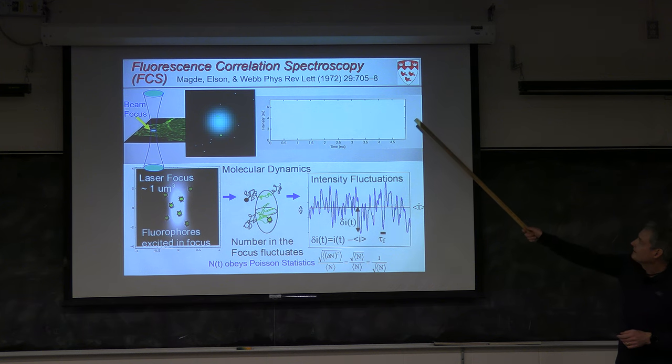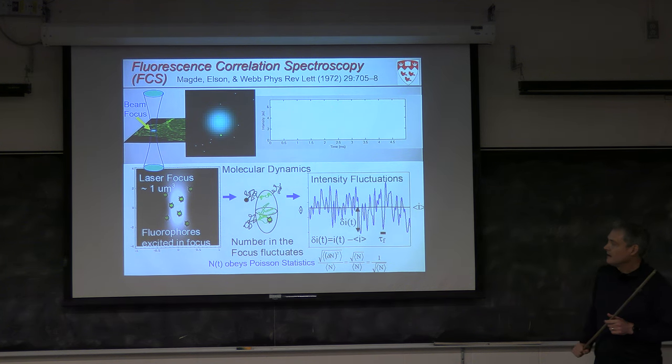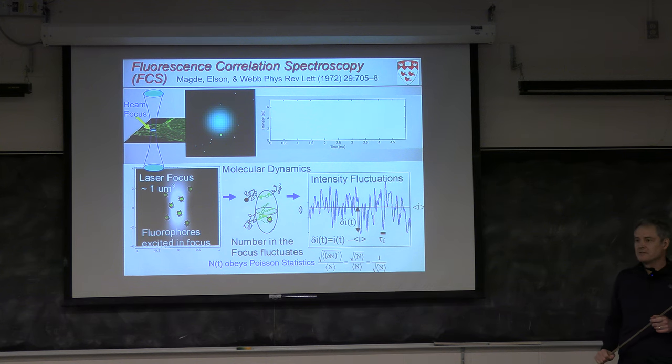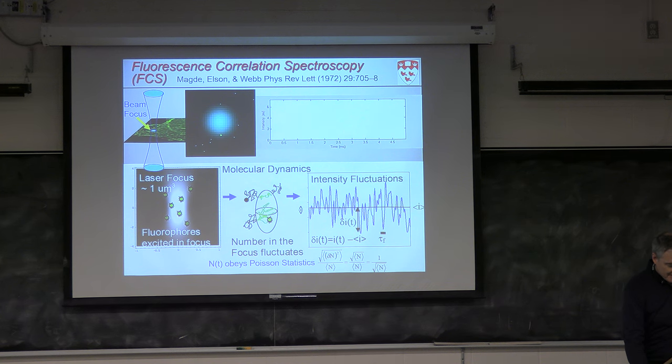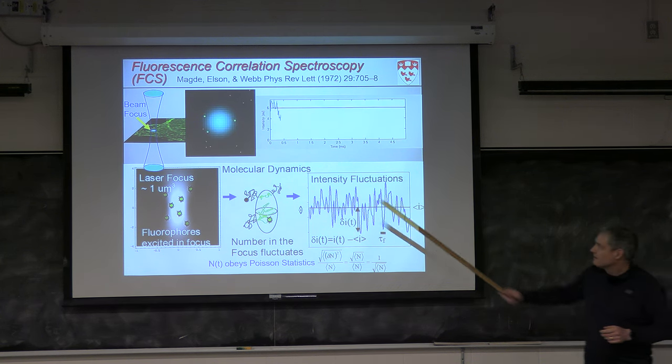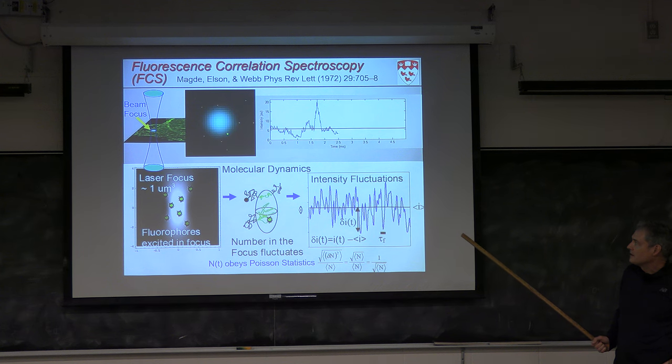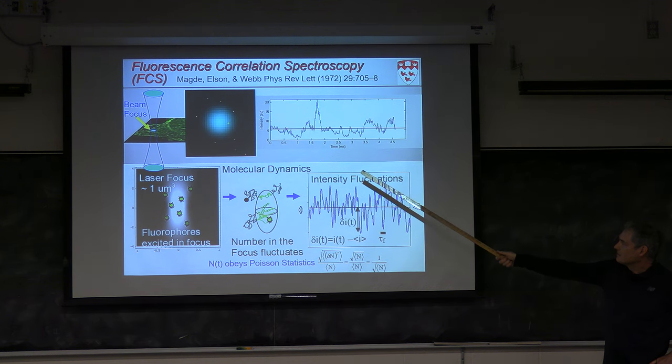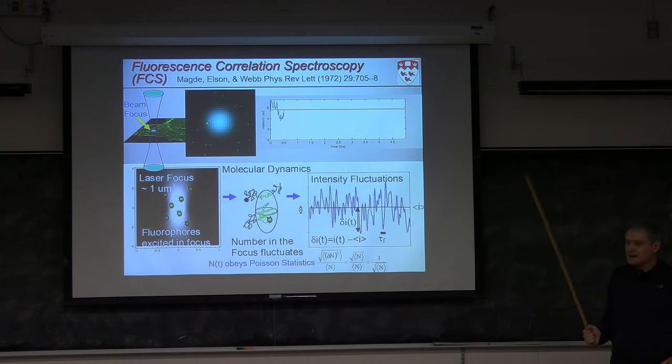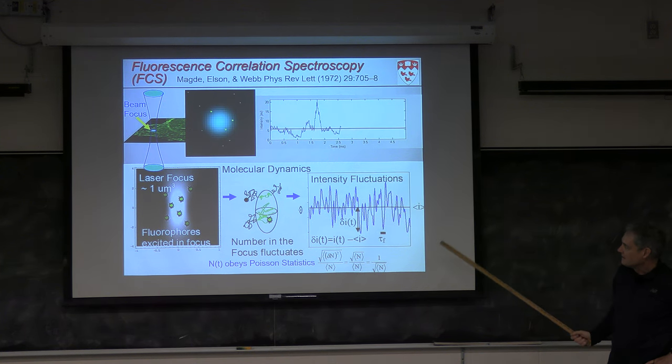So that will lead to fluctuations which we can detect if the numbers of molecules are small enough and if the focus is small enough. So here conceptually, and here I highlight the very first reference. We're coming up on the 50th anniversary of the first paper in Physical Review Letters outlining it. The title actually refers to observing thermodynamic fluctuations. And they actually were examining not diffusion, but binding of ethidium bromide dye to DNA. But the concepts were all built on fluctuations.